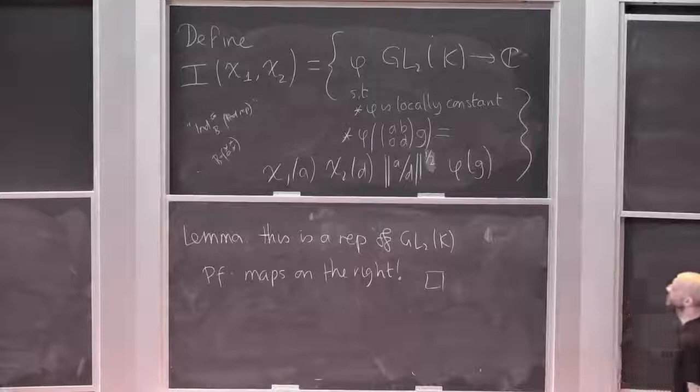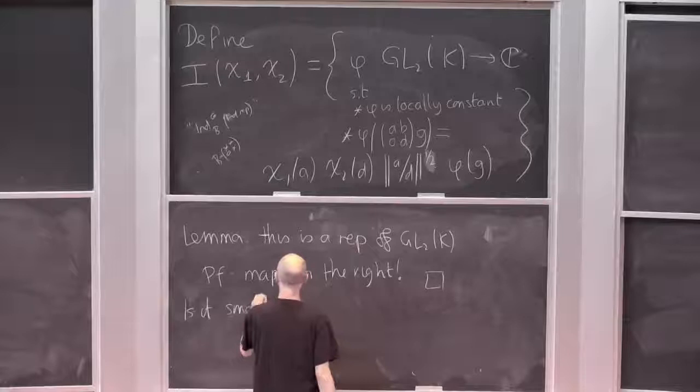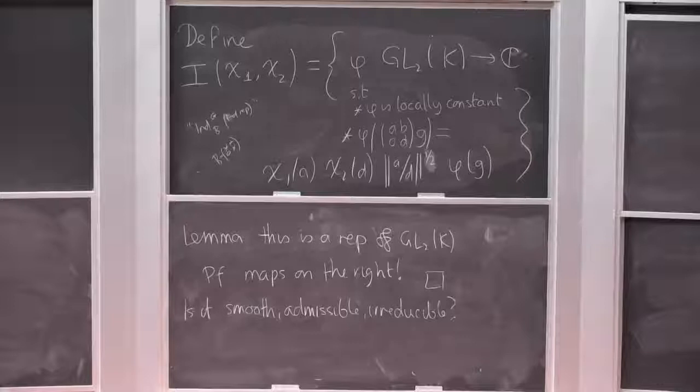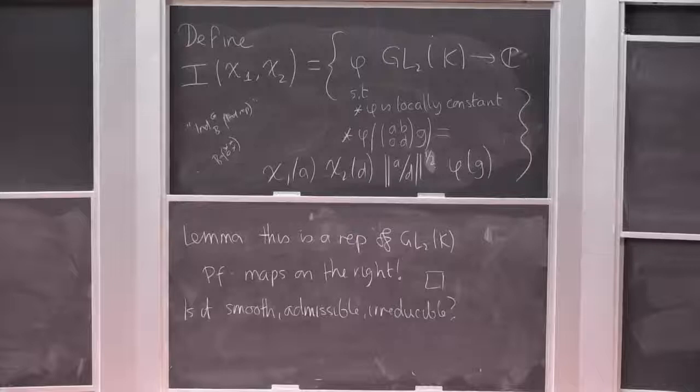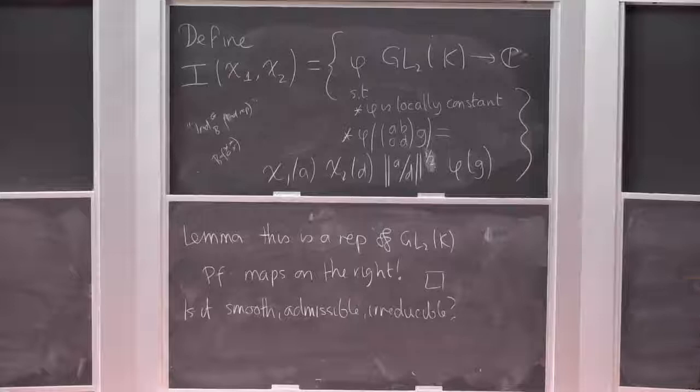Now what we really want to do is prove properties of the kind we've been talking about. Is it smooth? Is it admissible? Is it irreducible? Well, those are interesting questions. It's not always irreducible, in fact, but it is going to be smooth and admissible. Before we launch into all this, I need to tell you a key fact — a really useful fact.